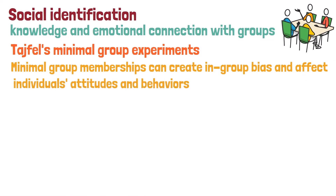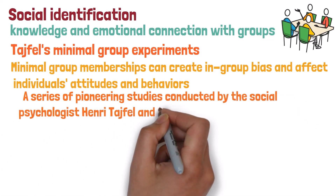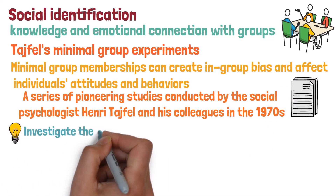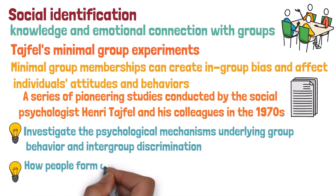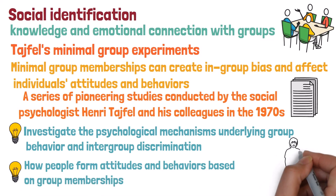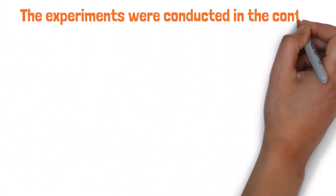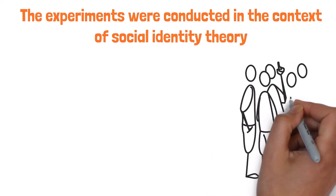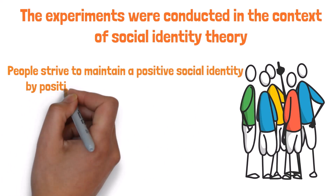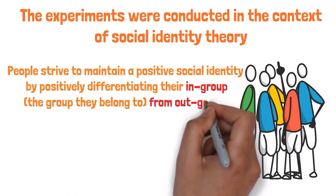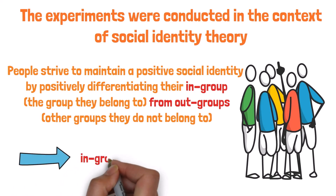Tajfel's minimal group experiments were a series of pioneering studies conducted by social psychologist Henri Tajfel and his colleagues in the 1970s. These experiments aimed to investigate the psychological mechanisms underlying group behavior and intergroup discrimination, focusing on how people form attitudes and behaviors based on group memberships — even when those memberships are entirely arbitrary and have no real significance. Conducted in the context of social identity theory, the studies explored how individuals strive to maintain a positive social identity by differentiating their in-group from the out-group, which can lead to in-group favoritism and out-group discrimination.